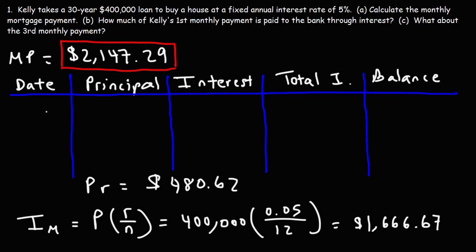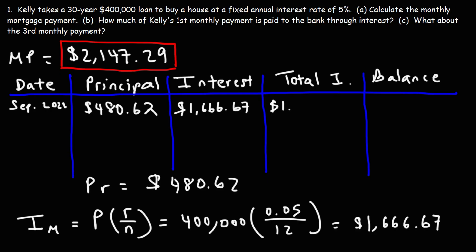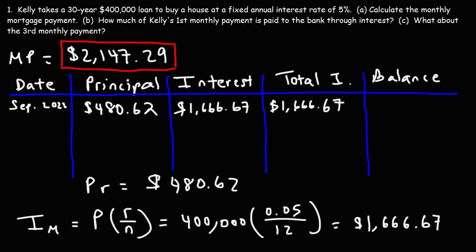We're currently in September 2022. In this month, $480.62 goes into the principal and the interest is $1,666.67, which is also the total interest paid so far. To get the remaining balance, we take the original balance minus the portion going to principal: $400,000 minus $480.62 gives us a remaining balance of $399,519.38 after the first payment.